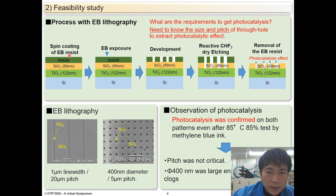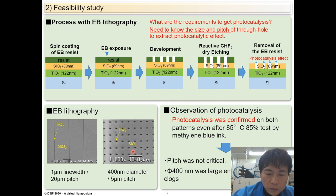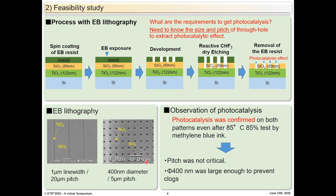We used a process flow like this: spin coating of resist, exposure, development, and reactive dry etching of the SiO2 layer to make a through-hole. We tested two patterns to investigate the requirement of the through-hole: a trench with a width of 1 micron and a hole with a diameter of 400 nanometers. Fortunately, both patterns showed a clear photocatalysis effect even after 85 degrees and 85% humidity, meaning that a pitch of 20 microns is still in a diffusion range of photocatalysis effect, and a 400 nanometer hole is big enough to prevent clogs in the environmental test. Based on this feasibility study, we saw that this idea was plausible.